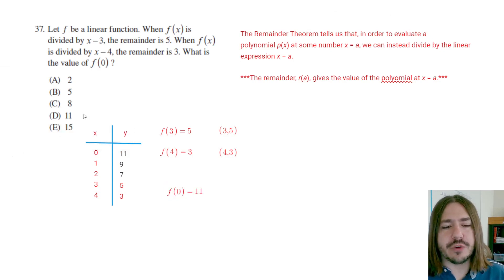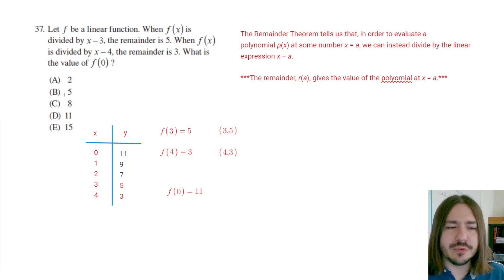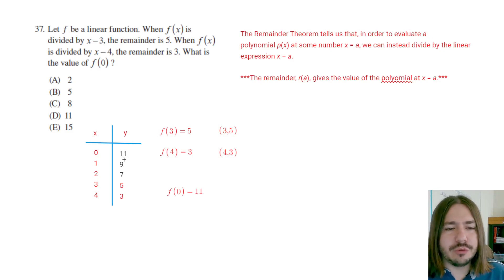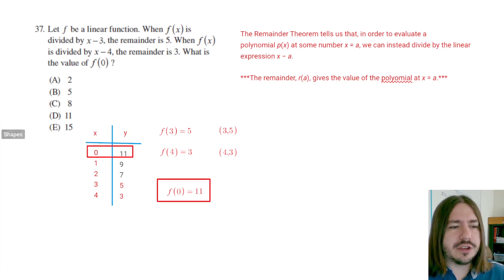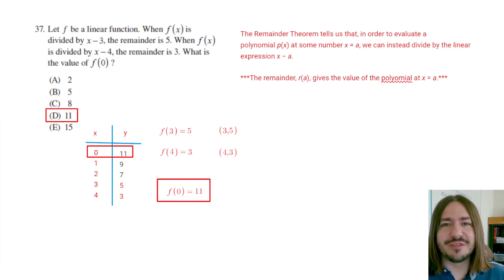This is not a super obvious problem in terms of how to approach it, but if you work these kinds of problems out a couple of times, you'll recognize it when it comes time for the test and should be able to answer it pretty easily. The algebra is really non-existent — there's no manipulation of variables. Arithmetic is very minor, just adding 2. The real difficulty is figuring out what you're supposed to do, and the key is understanding the remainder theorem. So the value of f of 0 is 11 and we find that in choice D. Number 37 is letter D. Thanks for watching, y'all have a great day.